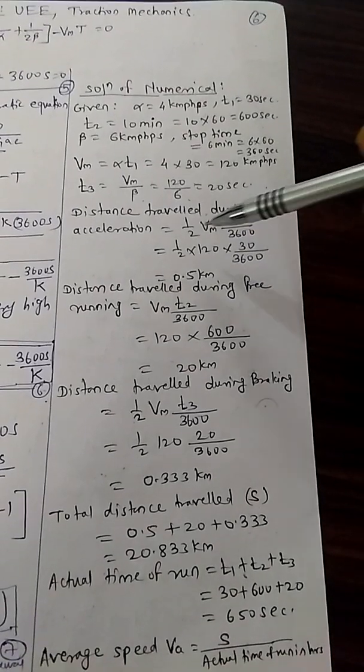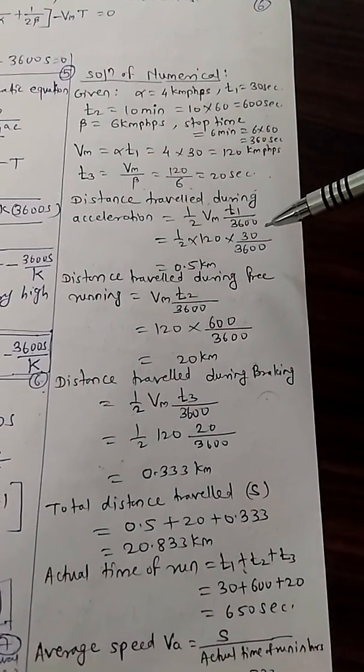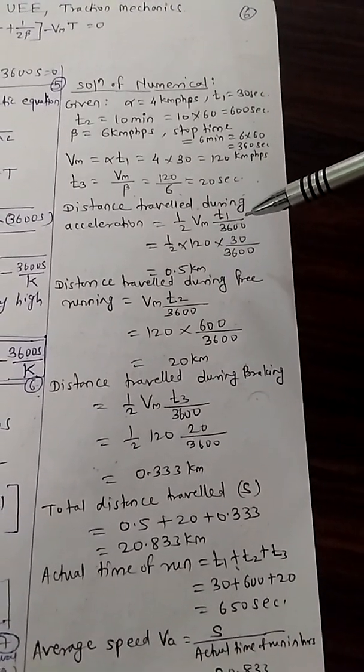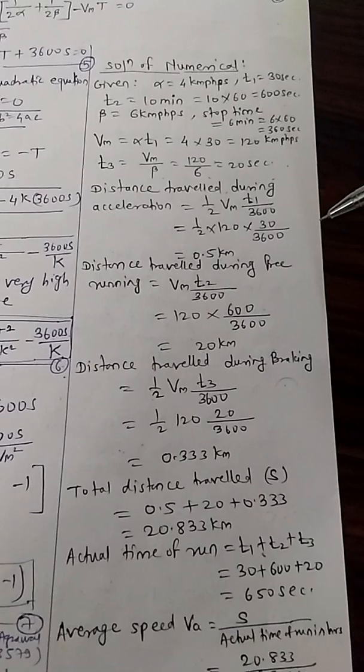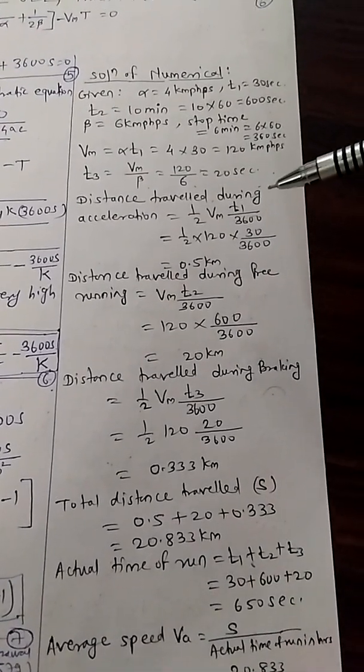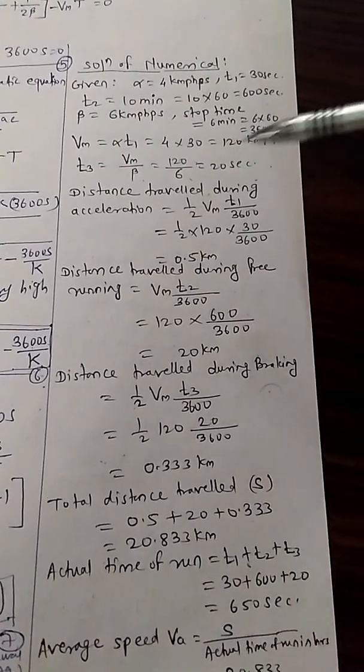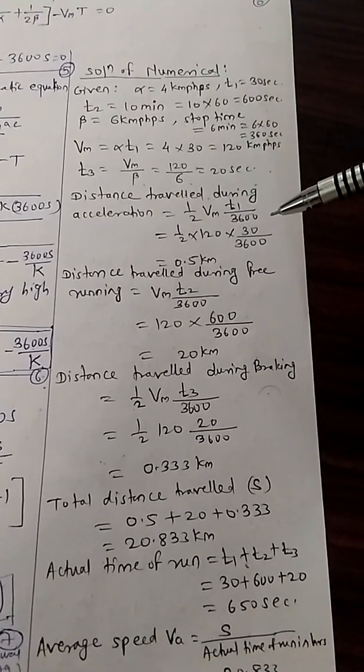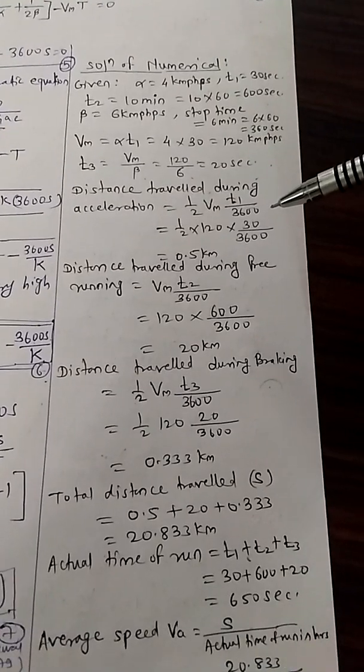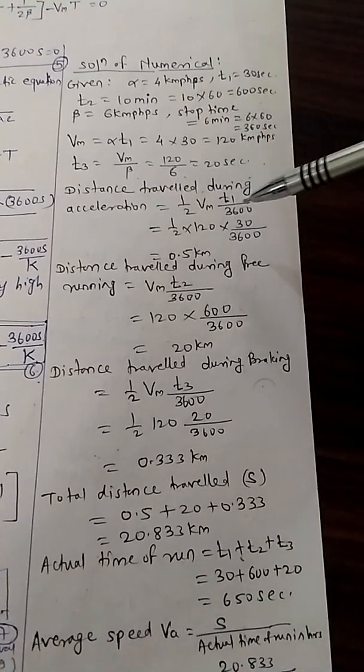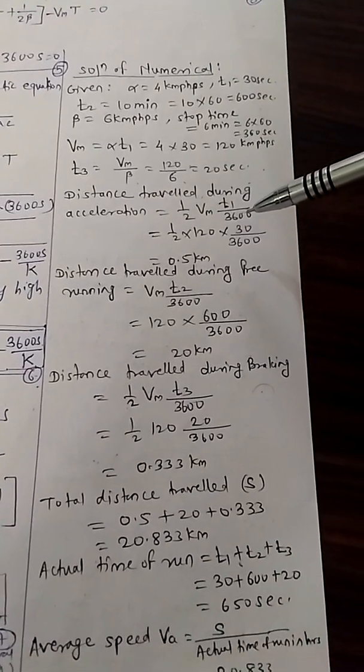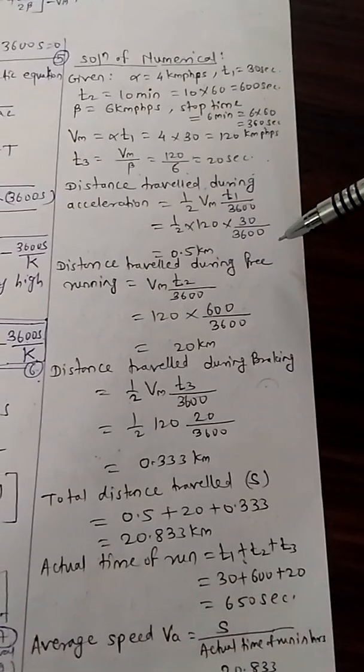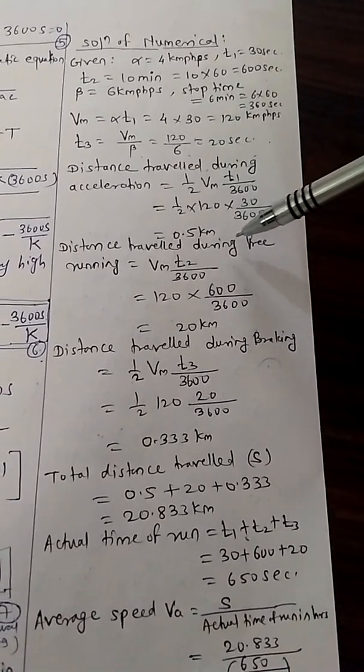Distance travelled during acceleration, that is half Vm T1 upon 3600. You know the calculation of distance from the last derivation which we have discussed. The area of the triangle during acceleration in the speed time curve, we can find out the distance that is half Vm T1 upon 3600. Time here taken in hours. Put the values, we get 0.5 km.